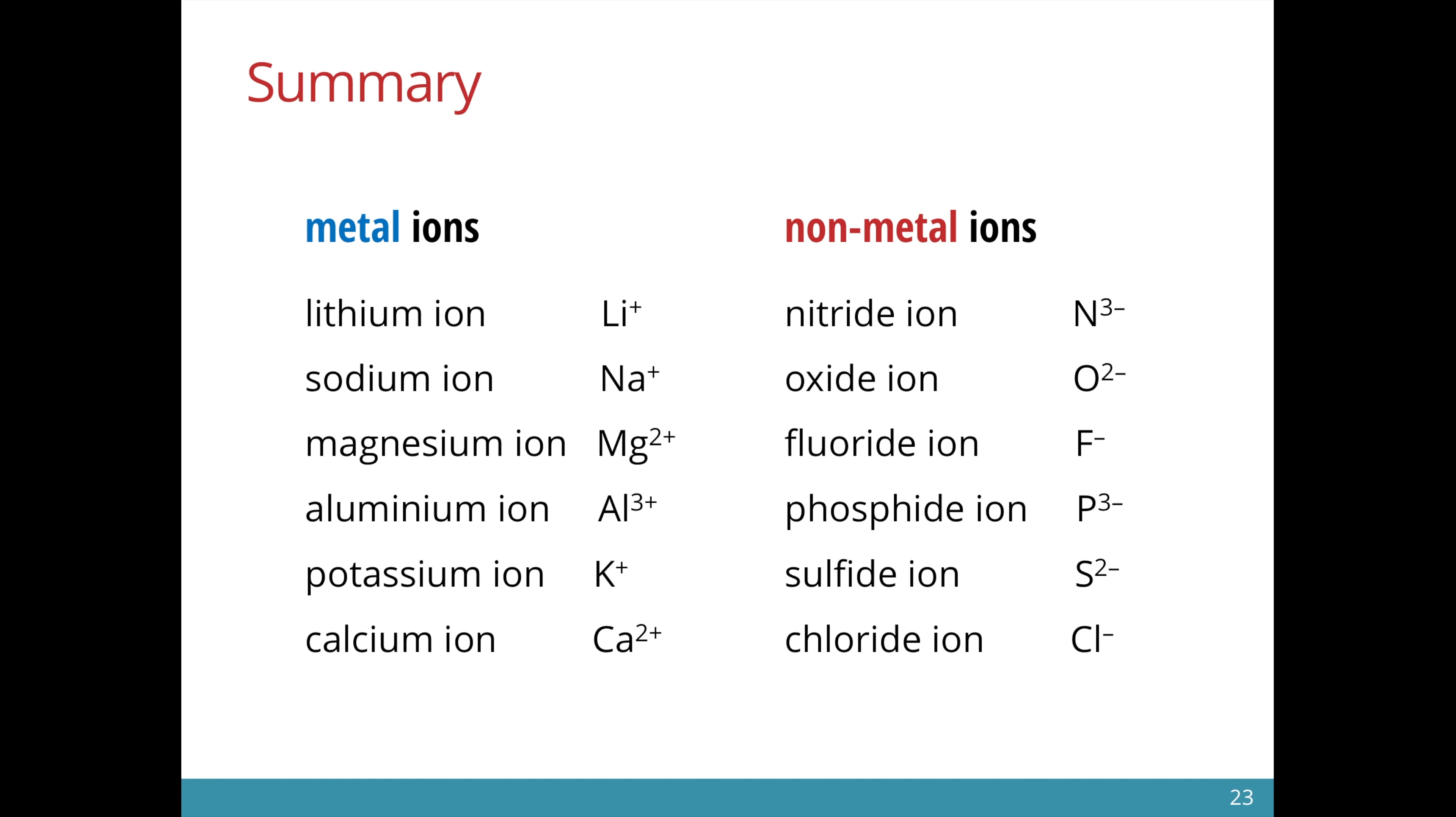Here is a summary showing various metal ions and non-metal ions. Beside each name is the chemical formula of that ion and we put the charge as a superscript. When the charge is plus 1, we do not put a 1 in front of the charge. We only put the number when the charge is 2, 3, or greater.